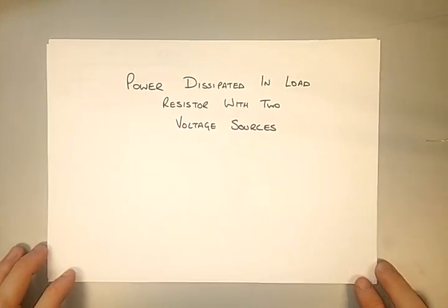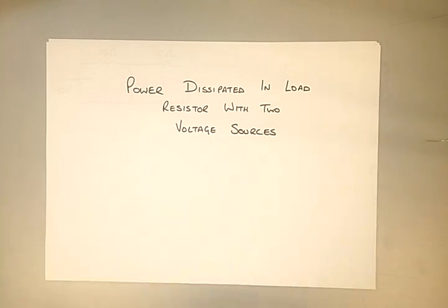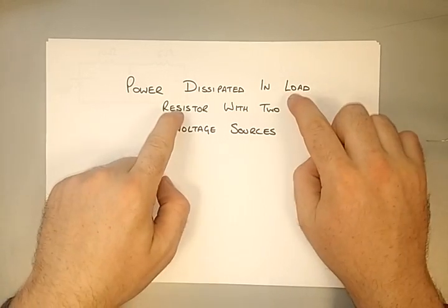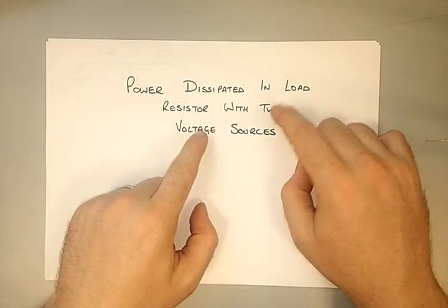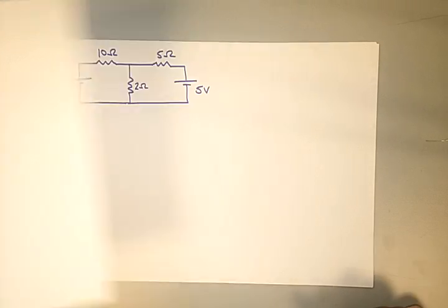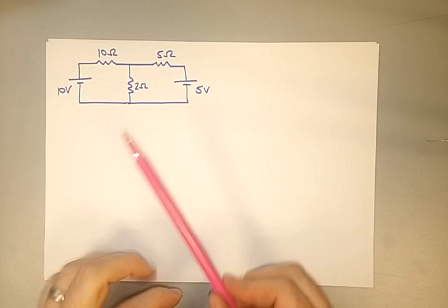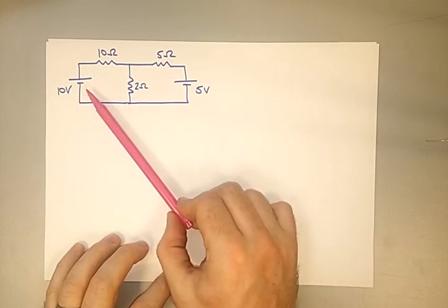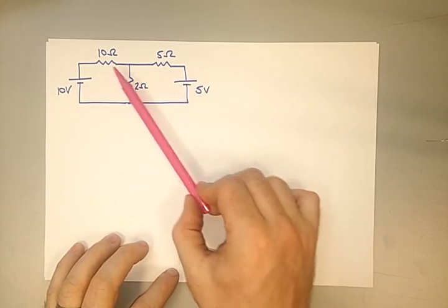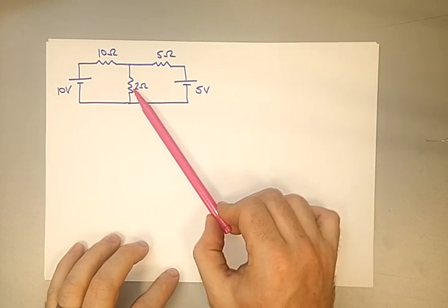Today we're going to look at the power dissipated in a load resistor with two voltage sources. We've got three elements: a load resistor and two voltage sources. The circuit diagram has two voltage sources, each with an associated internal resistance, and a load resistor.